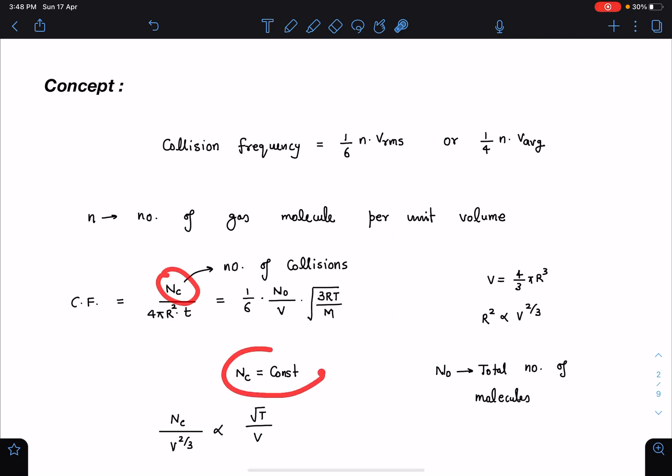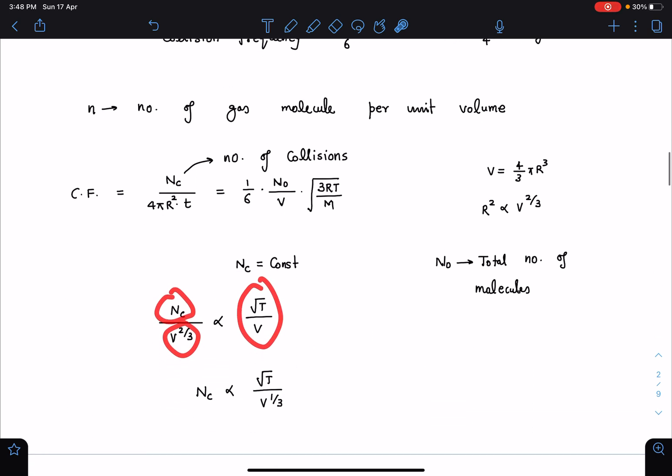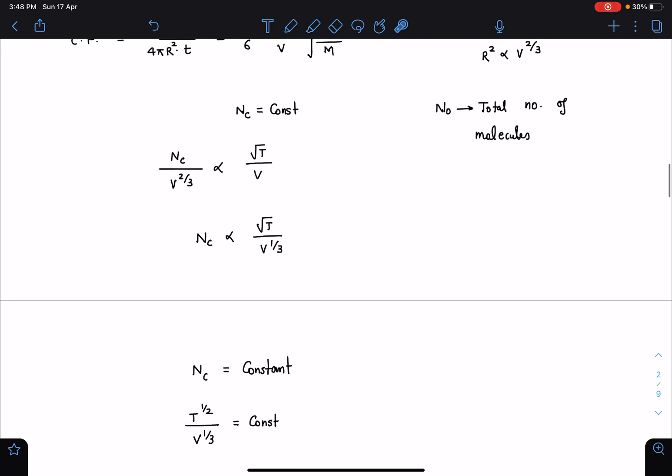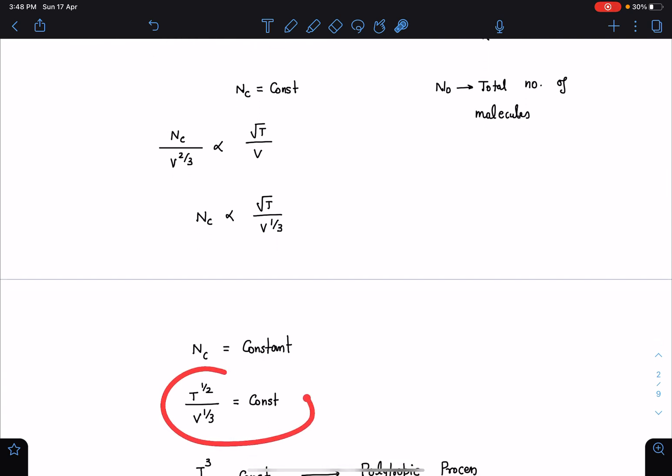Now I'll bring this here, and this N_c has to be constant, it is given in the problem statement. So N_c divided by V to the power 2/3 equals root T by V. I can adjust this: number of collisions is proportional to root T by V to the power 1/3. So further when I arrange, I am getting this as a process equation T to the power 1/2 and V to the power 1/6.